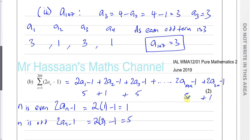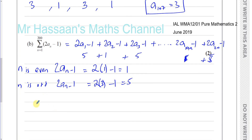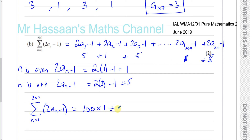There are 200 terms in total: 100 of them are fives (from odd n) and 100 of them are ones (from even n). So the sum = 100 × 5 + 100 × 1 = 500 + 100 = 600.